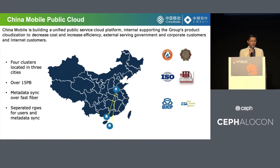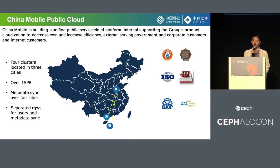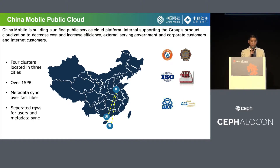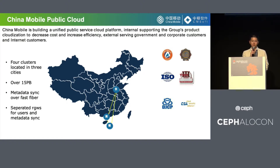Channel Mobile is building a unified public service cloud platform — internally supporting the group's product cloudization to increase cost efficiency, and externally serving government, corporate, and internet customers. Up to now, there have been four clusters in the Channel Mobile Cloud, located in Beijing, Guangzhou, and Changsha, with a total capacity of over 15 PB. The metadata sync runs between them over fast fiber, and we use separated RGWs for users and metadata sync to decrease latency.